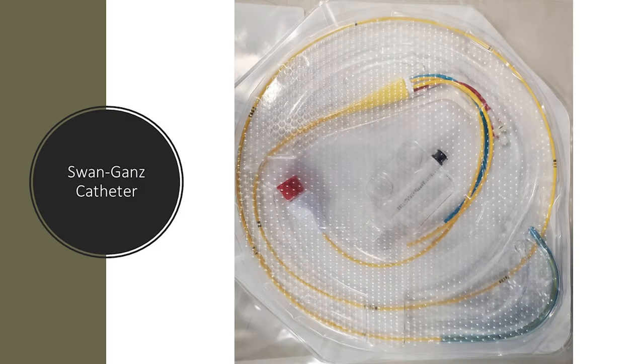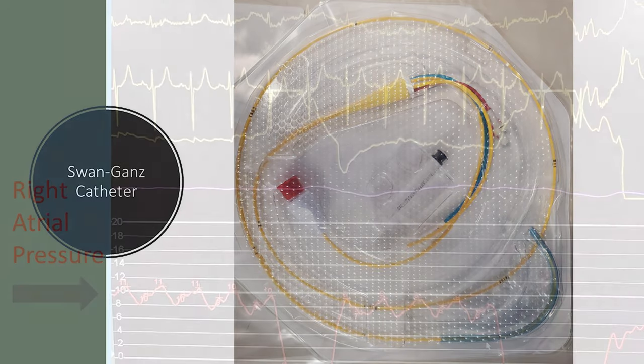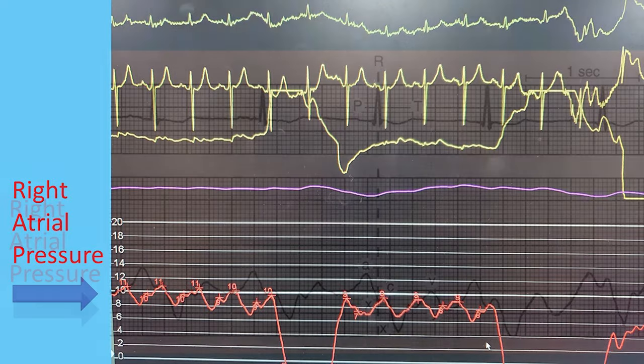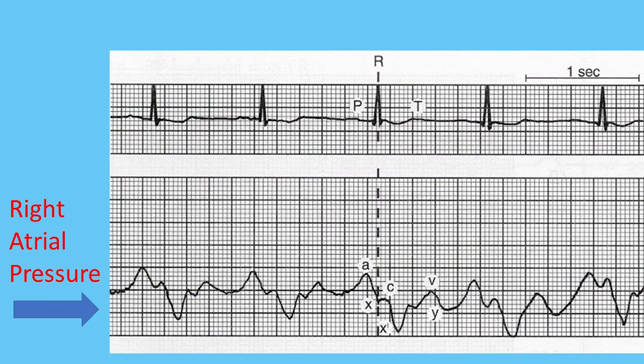The catheter is then used to go all the way up to the right atrium. A commonly used catheter for this purpose is the Swan-Ganz catheter, as shown here. This catheter is taken all the way up to the right atrium, and the pressure is measured, and if needed, blood samples to measure oxygen saturations are taken. This is what I see on the monitor when I perform the procedure, and here is a schematic representation of how it should look.